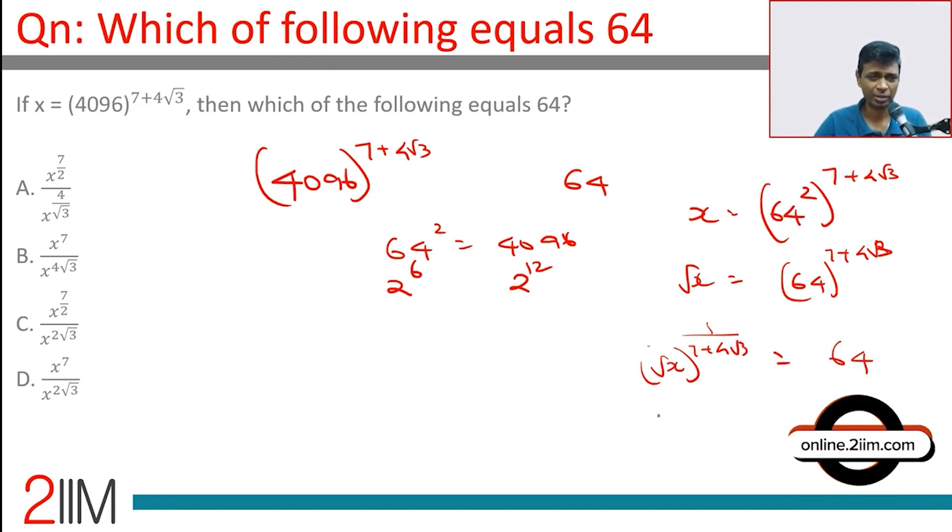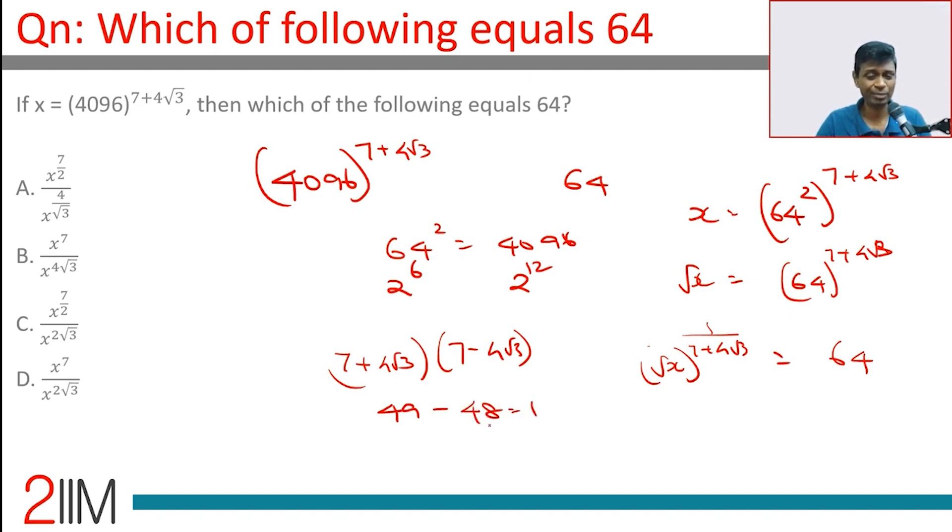1 by 7 plus 4 root 3. 7 plus 4 root 3 is a beautiful number because 7 plus 4 root 3 into 7 minus 4 root 3 is 7 squared, 49 minus 16 into 3, 48, which is 1. The reciprocal of 7 plus 4 root 3 is 7 minus 4 root 3.